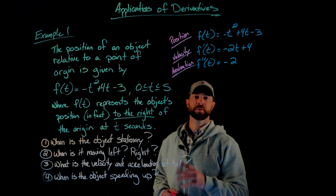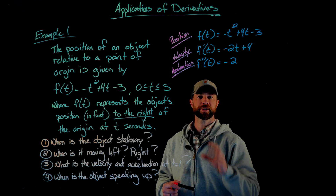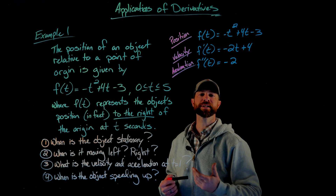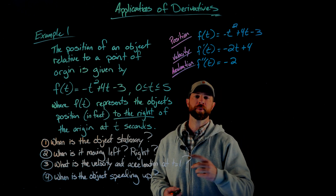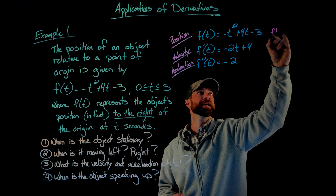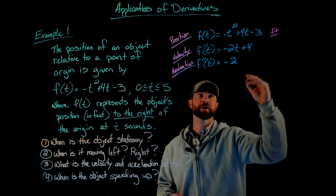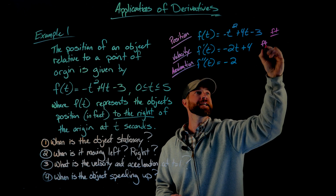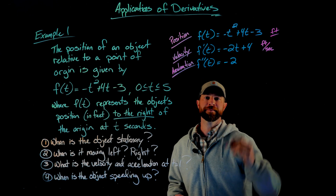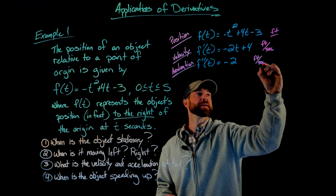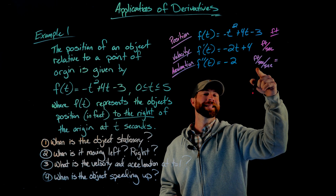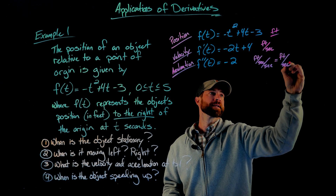Before we jump into these questions, it's always important to know the outputs. These derivative functions always have the same input — in this case, t is always going to be seconds. But the outputs change as the rates of change of the previous function. So first we start with an output of feet. The first derivative, which is velocity, outputs feet per second. The acceleration function computes feet per second per second, and the shorthand for this is feet per second squared.